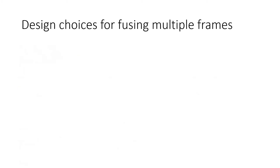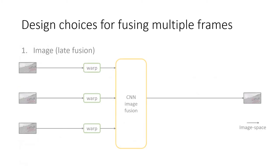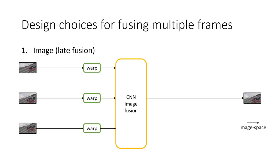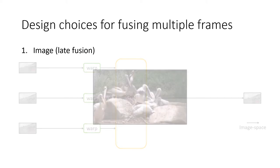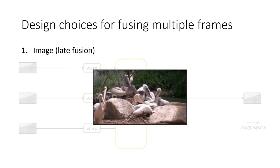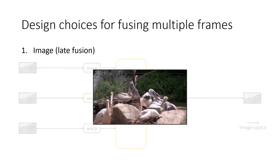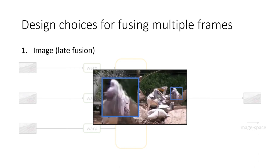With the aligned frames, we explore several fusion strategies. First, we can directly blend the warped color frames in the image space to produce the stabilized frame. However, image space fusion is prone to ghosting artifacts due to misalignment or glitch artifacts due to inconsistent labeling between neighboring pixels.